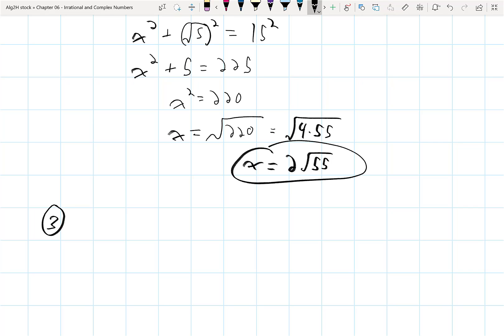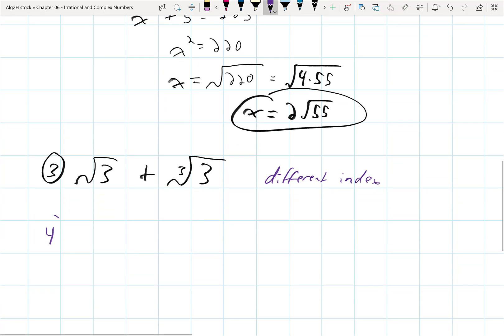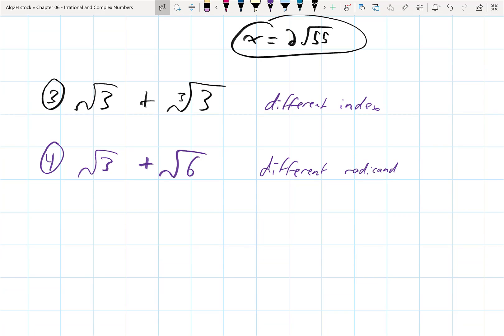So if I had root 3, and I wanted to add the cubed root of 3, what would I do? Well, I actually can't do anything, and I can't do anything because they are a different index, which means they're not really like terms, so that's out. Let's do another one that we can actually do. Root 3 plus root 6. JK, you can't add those because those are different radicands. So that's out.